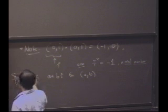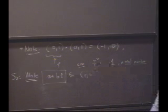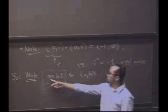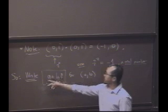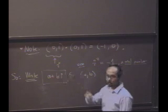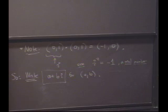we often write a plus bi for the element a comma b. This is the more usual way of writing a comma b. We'll write it as a plus bi. Because, after all, isn't it 1, 0, plus 0, plus... Isn't it A, 0, plus B, times 0, 1? All right.